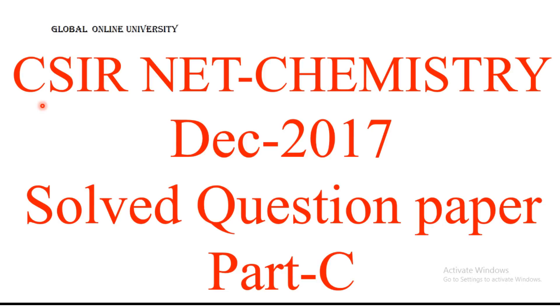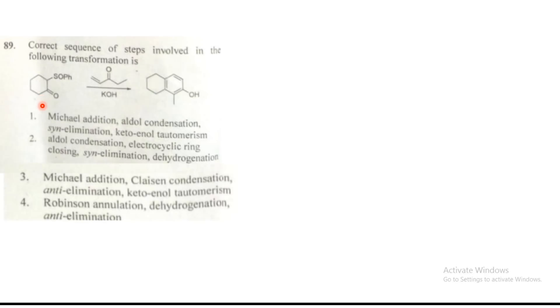Hello friends, welcome to Global Online University. I am going to solve some questions from December 2017 CSIR NET Chemical Science question paper. You can see here this is question 89, where a Michael addition, then aldol type reaction, and then cyclization or elimination reaction occurs. What is this reaction known as? They have given four options where Michael addition, aldol condensation, cine elimination, keto-enol tautomerism.